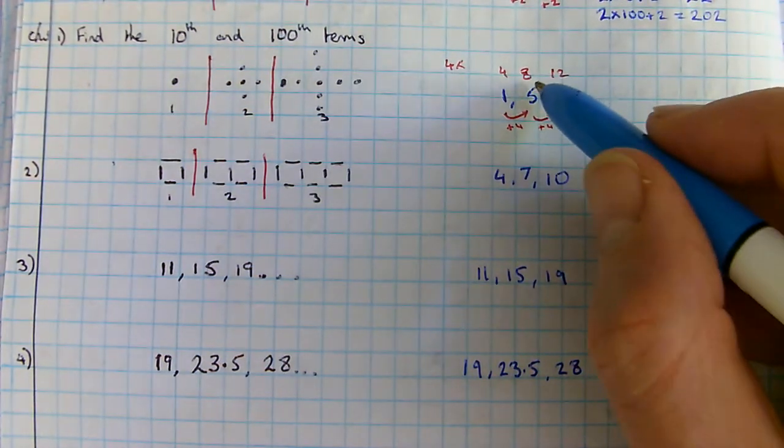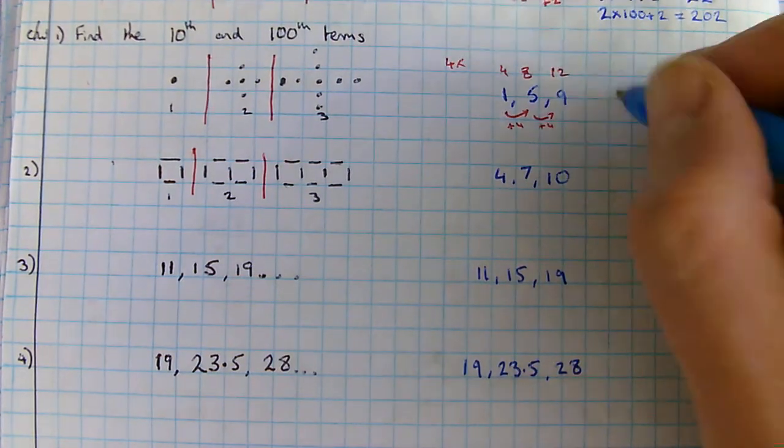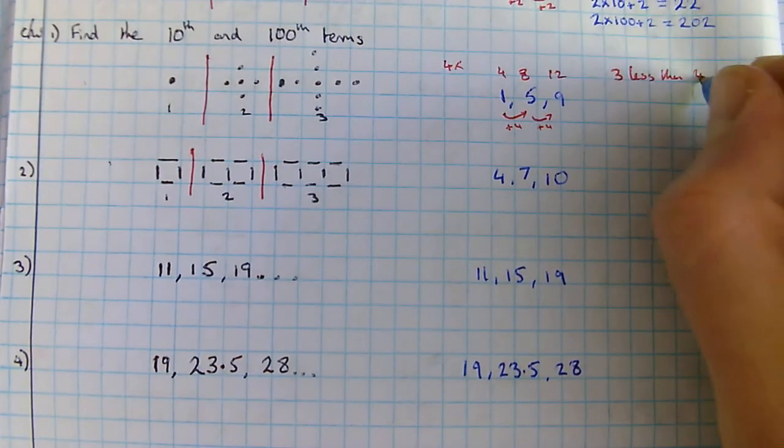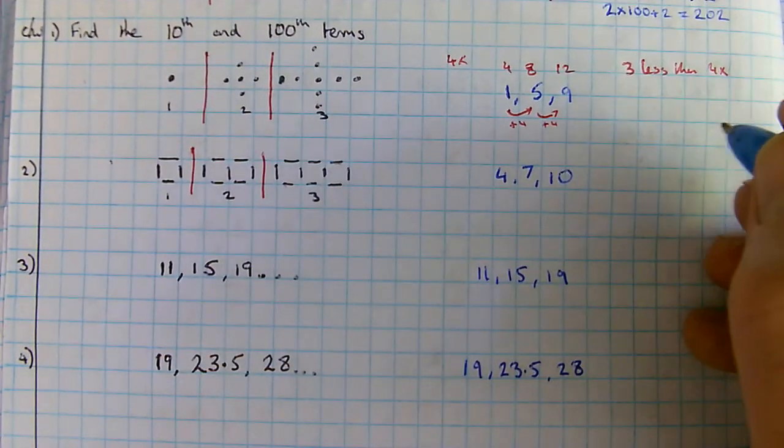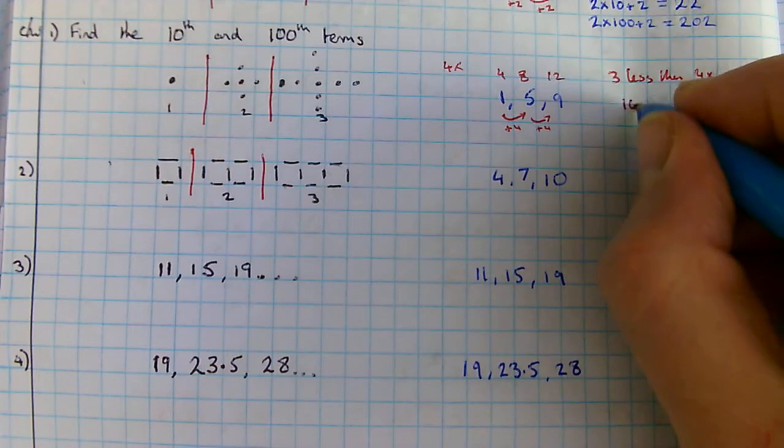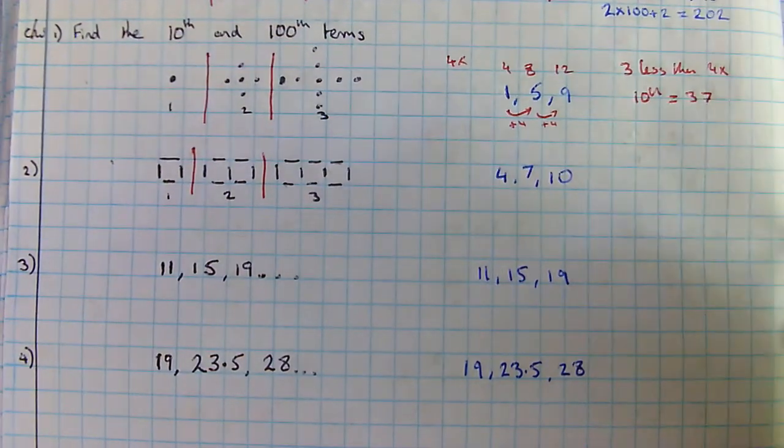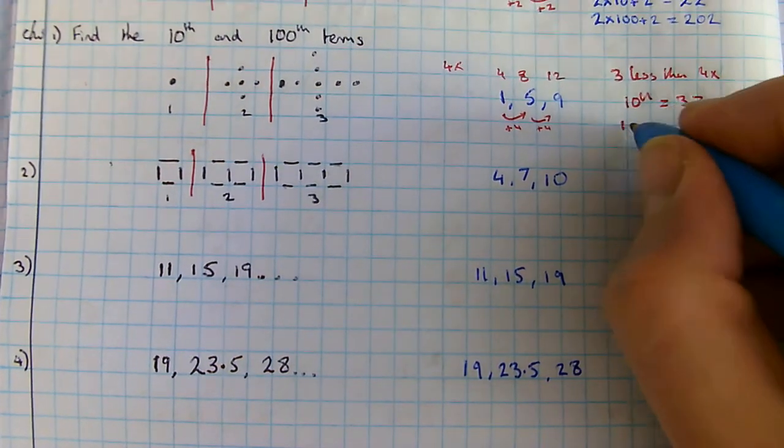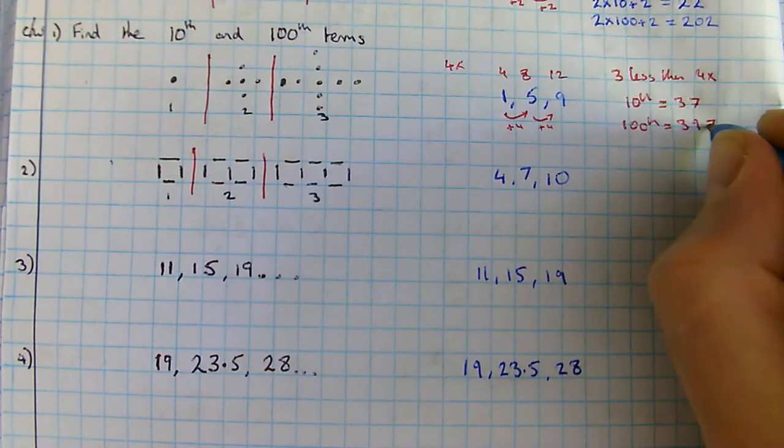If I look at the relationship with the four times table, each of these numbers is three less than the four times table. So it's three less than four times table. Four times ten is forty. Take away three is thirty-seven. Four times a hundred is four hundred. Take away three is three hundred and ninety-seven. Hopefully you got both of those right.